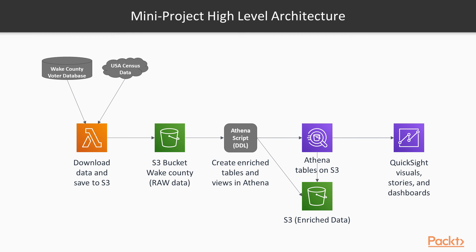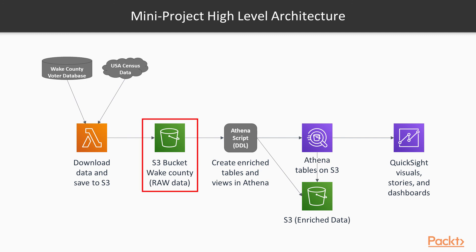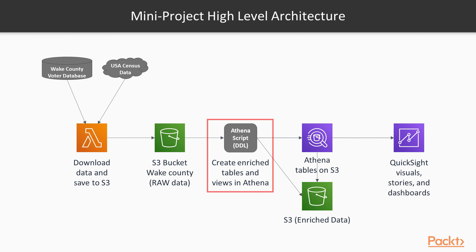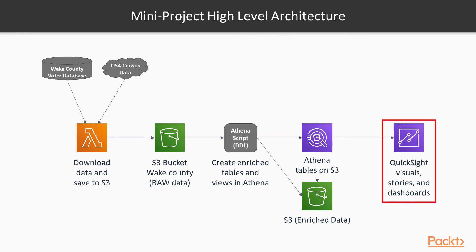Now let's look at the mini-project architecture at a higher level. The flow of information is from left to right. We start from the two sources: the Wake County voter website and the U.S. Census data. We have to download the files using Lambda and save them to S3. This data in S3 will be called the raw data. Using Athena scripts, we will create enriched data in S3 combining the datasets. Finally, these tables and views will be surfaced using Athena and then visualized using QuickSight as stories and dashboards.